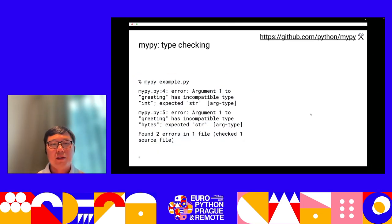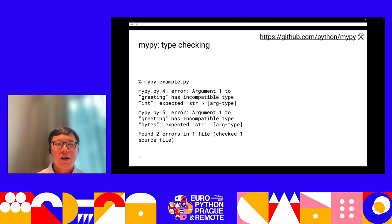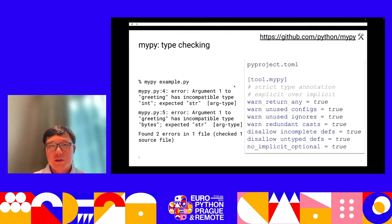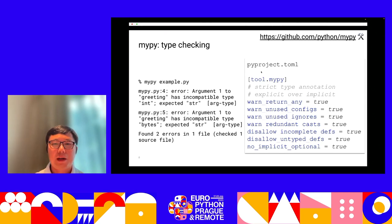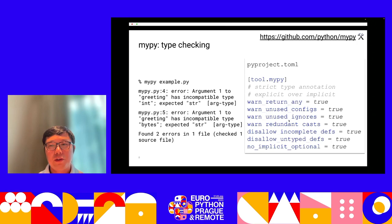We also use MyPy to type-check our code, which is really useful to catch type errors while developers are editing the code instead of finding them when the code is released to production. It can be configured in pyproject.toml, and we usually recommend enabling strict config options to make MyPy suggestions more useful and specific.